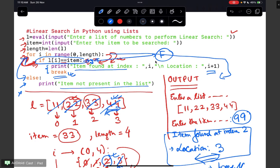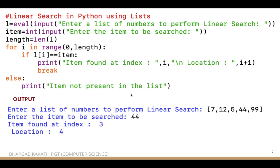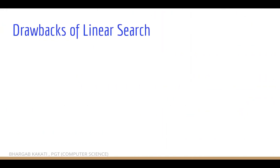I hope this code is clear. We have traced the program. Looking at the output again: with item 44 in the list, it shows item found at index 3, so location is 4. If we search for 77, which is not present, it traverses the entire list and displays that the item is not present in the list.